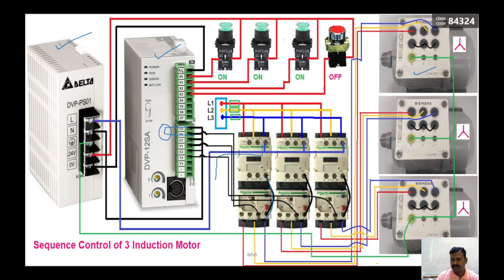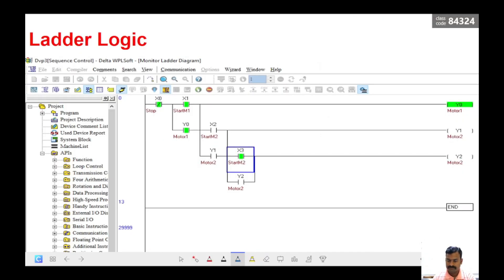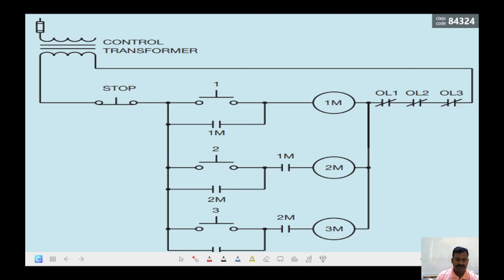Likewise, the second and third motors get connected in sequence and the respective motors run. At any point the stop button can be operated, and when it is, the ladder logic turns off all the contactors so the motors go off. This is the ladder logic for the given circuit, which we will see in the simulation. The same problem can also be solved in a different way — this is another control circuit with the same number of switches and coils but arranged differently.